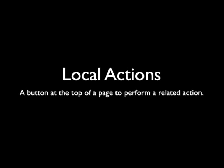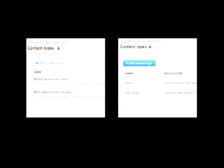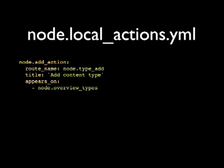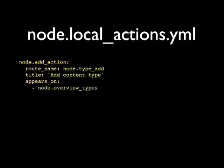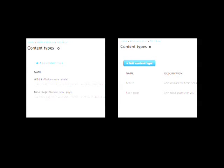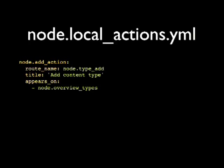Local actions are the buttons at the top of the page. Local actions used to be in hook_menu and are now in a YAML file. Here's the add content type local action: it appears on the node overview types route, has a title of 'Add content type', and the route name it links to is node.type.add. You'll have a file full of these, keeping those little buttons separate from the actual routes, referenced by name.